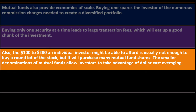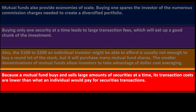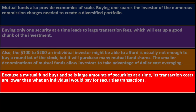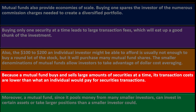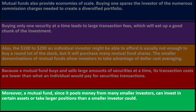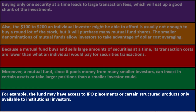The $100 to $200 an individual investor might afford is usually not enough to buy a round lot of stock, but it will purchase many mutual fund shares. The smaller denominations of mutual funds allow investors to take advantage of dollar cost averaging. Because a mutual fund buys and sells large amounts of securities at a time, its transaction costs are lower than what an individual would pay. A mutual fund, since it pools money from many smaller investors, can invest in certain assets or take larger positions — including access to IPO placements or structured products only available to institutional investors.